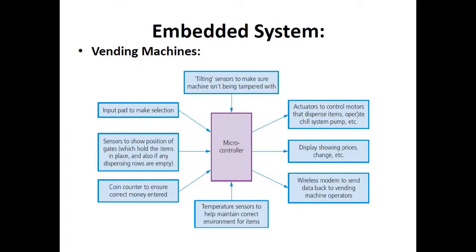Vending machines use tilting sensors to ensure the machine isn't being tampered with, actuators to control motors that dispense items, a display showing price and change, a wireless modem to send data back to the operator, a temperature sensor to maintain the correct environment for items, a coin counter, sensors to show the position of gates that hold items, and an input pad for selection. The output is the physical product dispensed, and some models also include a thermal printer that prints a small receipt.